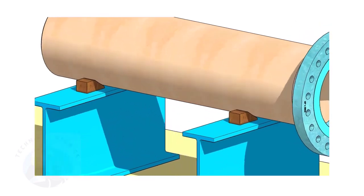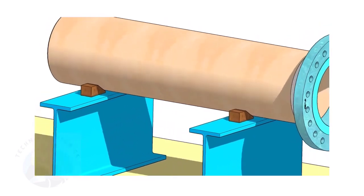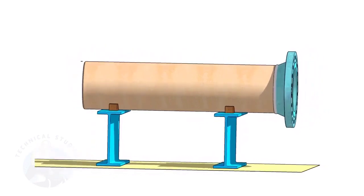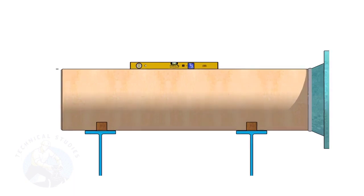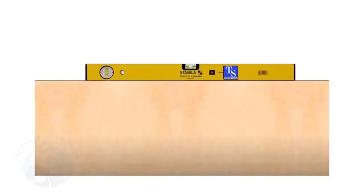Provide proper supports on both sides of the pipe to prevent rotation. Correct the level of the pipe. Check the plumbness of the flange a second time.